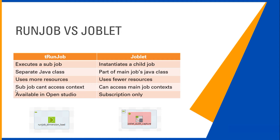A sub job cannot directly access context variables from the main job. If you have a master job calling multiple sub jobs, those sub jobs cannot access context variables unless you explicitly push them. With Joblet, however, the context of the main job is accessible, so you don't have to pass variables each time you invoke a reusable part of the code, making it more efficient compared to tRun Job.